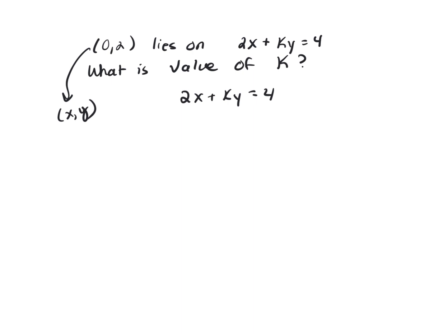So plug in the x value of 0, and now plug in the value of y which is 2, and solve for k. That gives us 0 plus 2k equals 4, so k equals 2.